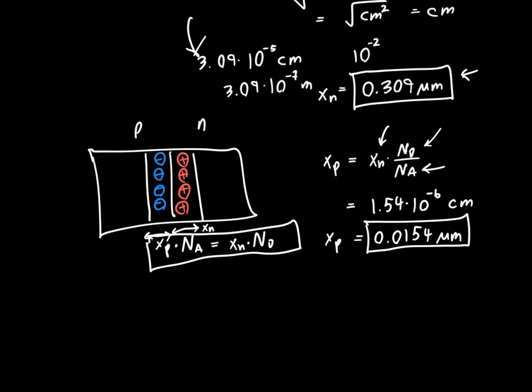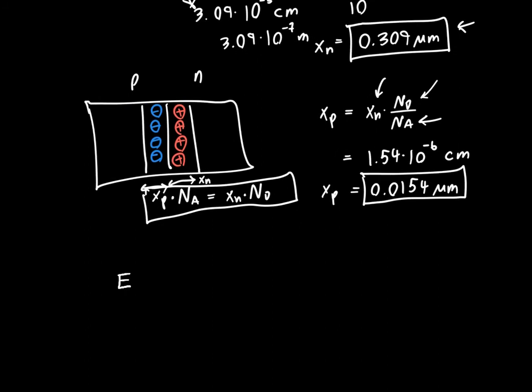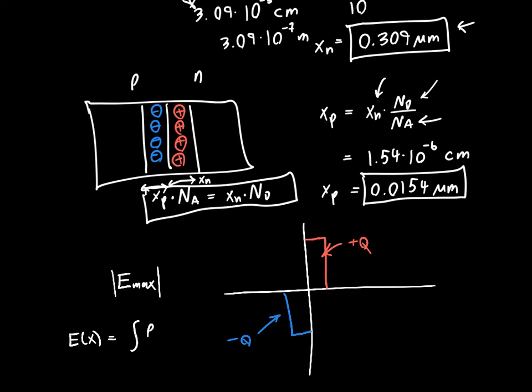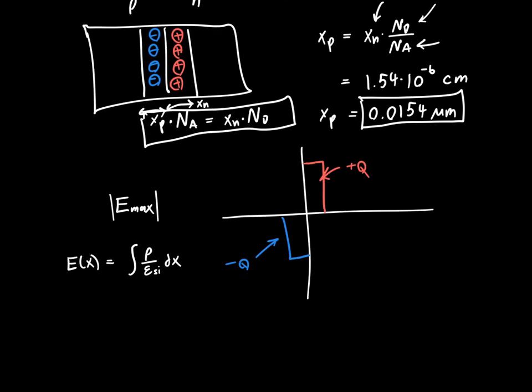Lastly, we want to calculate the maximum electric field, Emax. We just want its magnitude, we don't really care about its direction. If we remember the model we're using, we've got negative charge here on the P side and positive charge here on the N side, minus Q and plus Q. We can get the electric field from Gauss's law. In the previous video, we said that all we need to do is integrate the charge density divided by the permittivity of silicon with respect to the X direction. Initially the field will decrease and then the positive charge will cause it to increase again.